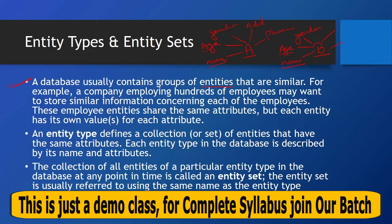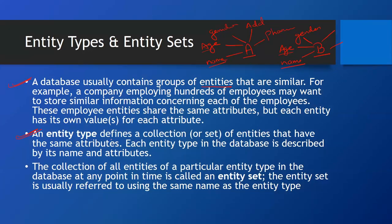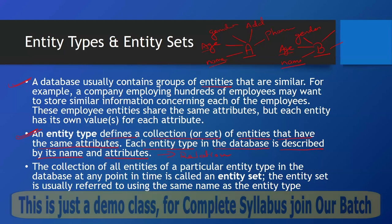An entity type defines a collection or set of entities that have the same attributes. Each entity type in the database is described by its name and attributes. Entity type will become a relation. For example, if we have an entity type 'Employee' and there are 500 employees in the company, each will share attributes like name, age, gender, address, phone number, and employee ID, so we will create a relation called Employee.